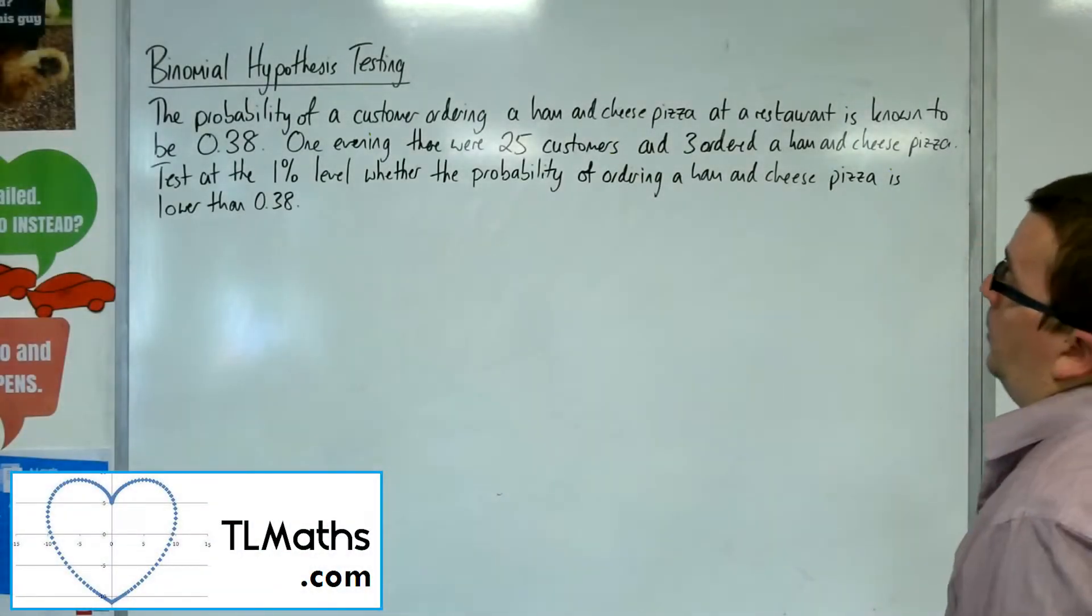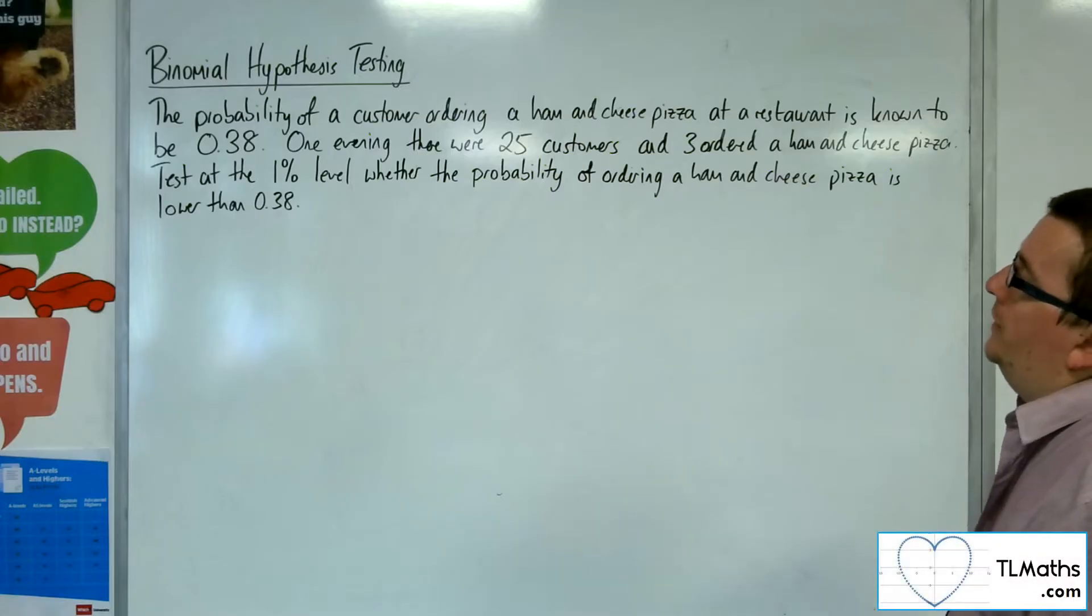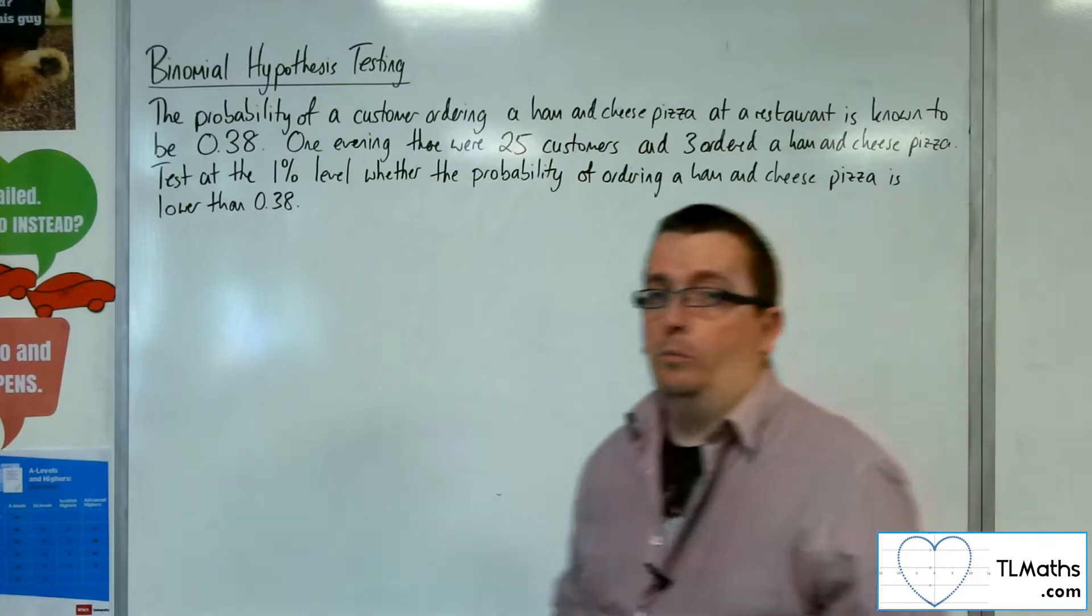In this video, the probability of a customer ordering a ham and cheese pizza at a restaurant is known to be 0.38. One evening, there were 25 customers and 3 ordered a ham and cheese pizza. Test at the 1% level whether the probability of ordering a ham and cheese pizza is lower than 0.38.